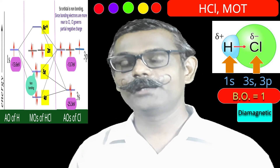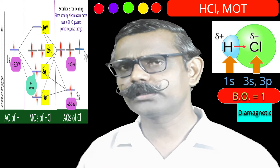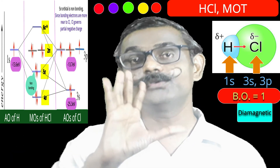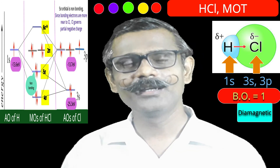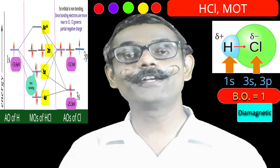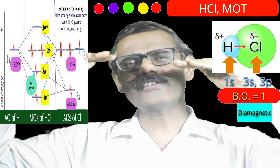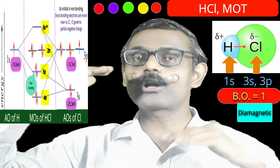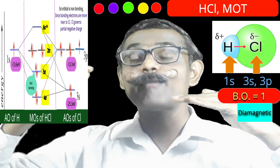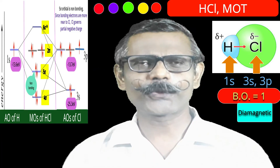For chlorine, with atomic number 17, the electronic configuration is 1s², 2s², 2p⁶, 3s², 3p⁵. The outer orbitals to consider are 3s and 3p. The energy of the 3p orbital of chlorine is −13.7 eV, and for hydrogen the 1s orbital energy is −13.6 eV — very nearly the same. The energy of the 3s orbital of chlorine is −25.3 eV, which is almost 12 eV different from the hydrogen 1s orbital.